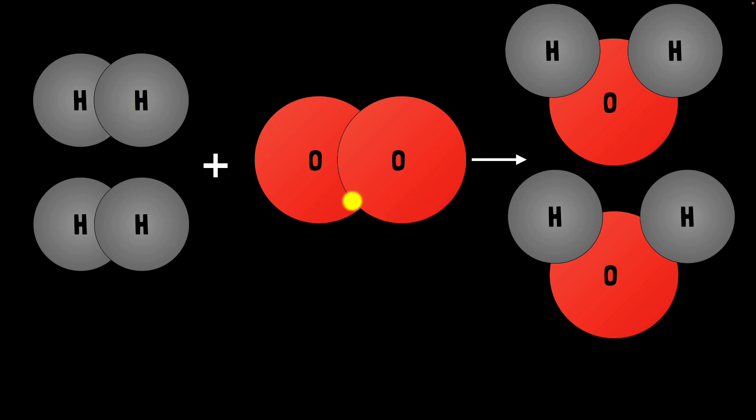Now, the substances that are present before the chemical reaction—like these hydrogen molecules or these oxygen molecules—we call them reactants. And the substances that are produced, that are present after the chemical reaction, the new substance that is produced—we call them products.